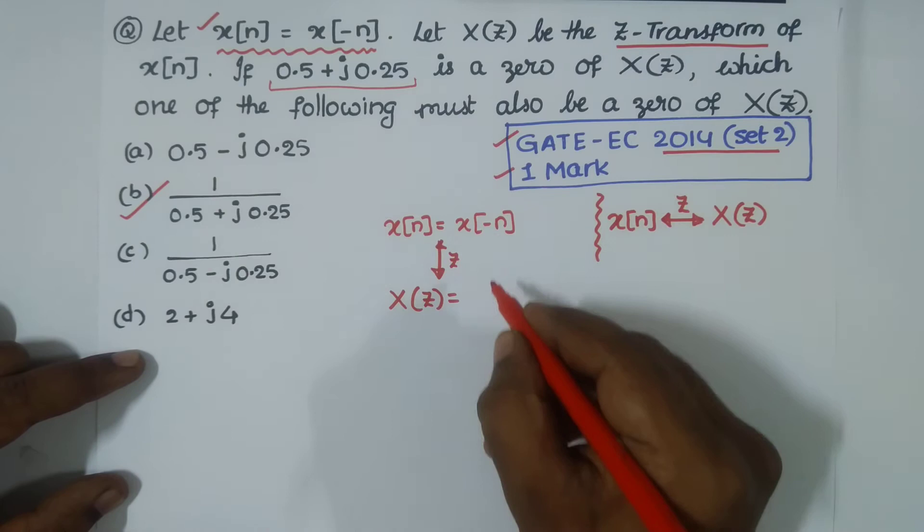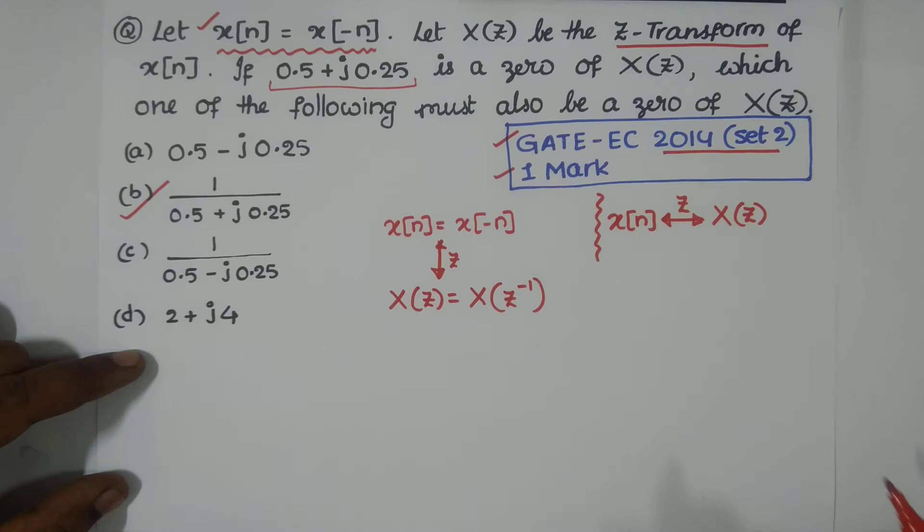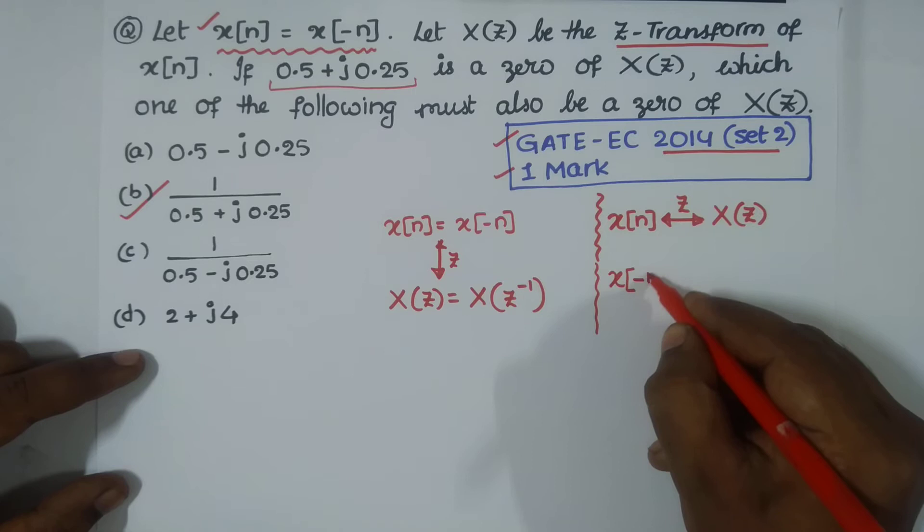On the right-hand side, we have X(Z^-1). It is a well-known fact that folding in the time domain, X[-n], is folding.